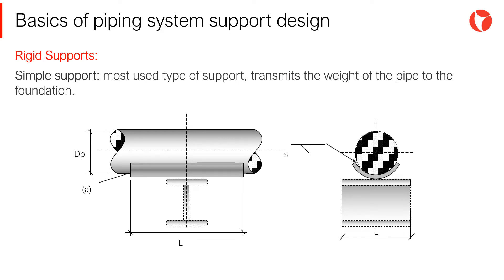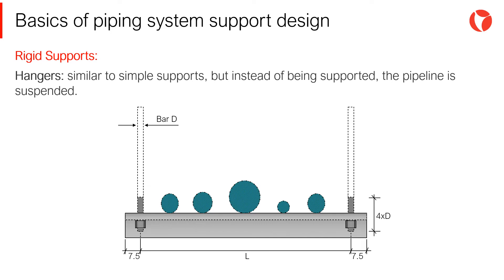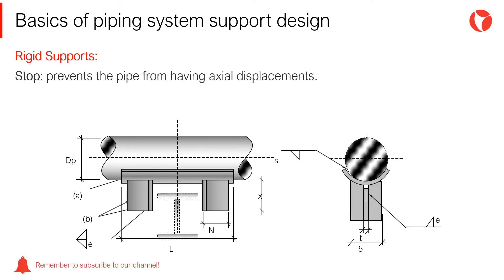Rigid supports — simple support: this is the most used type of support. Its function is to transmit the weight of the pipe and any other vertical loads to another supporting element or foundation. Hangers are similar to simple supports, but instead of being supported, the pipeline is suspended. Stops are a type of support which allow rotations but prevent the pipe from having axial displacements, and are used to limit excessive longitudinal displacements.